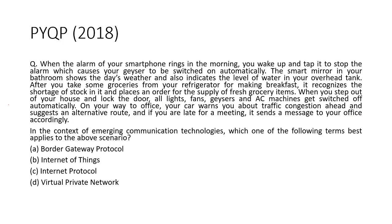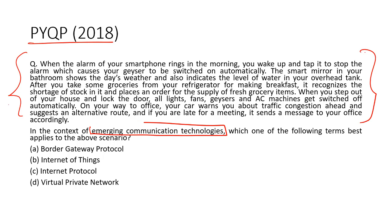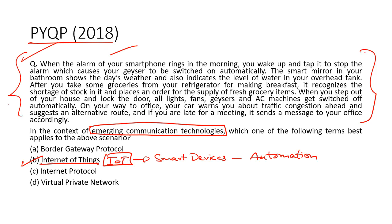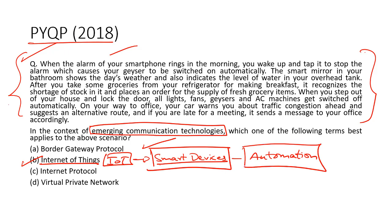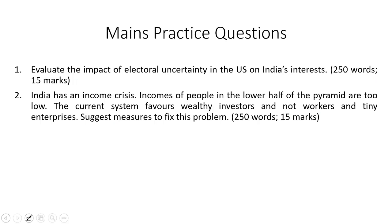Now let's take up a practice question from the 2018 Prelims paper. A long description has been given that refers to one of the emerging communication technologies. The technology described is essentially Internet of Things or IoT, which provides for the interlinking and networking of several smart devices and appliances that makes possible home automation and office automation.